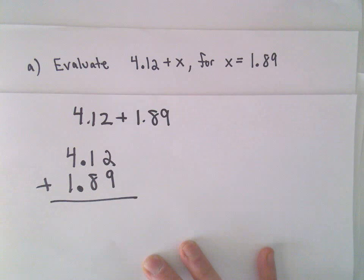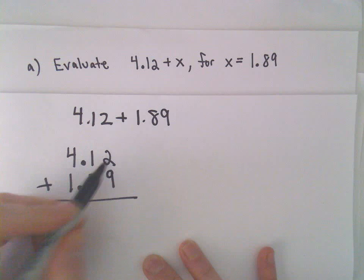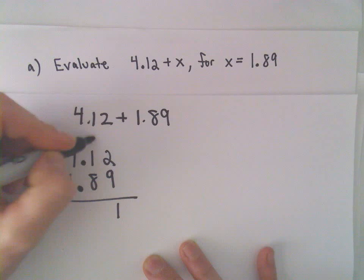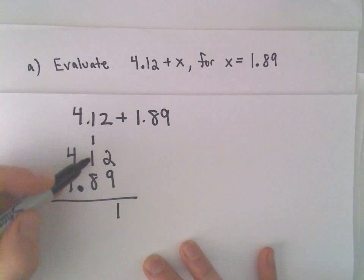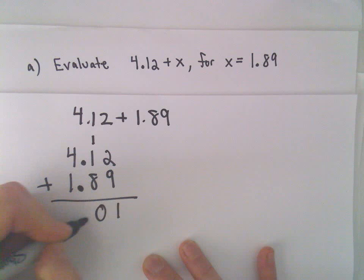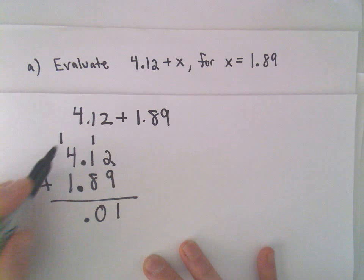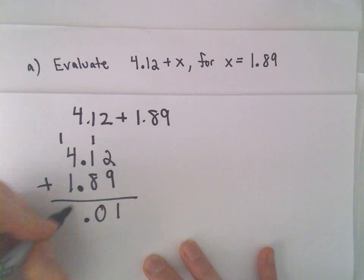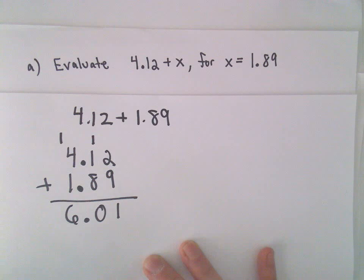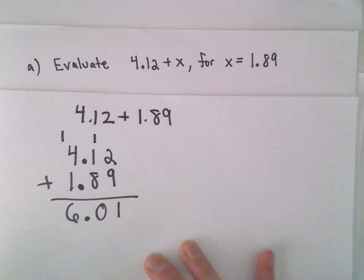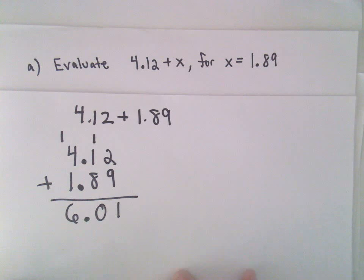Notice again, I've got my decimal places lined up. 2 plus 9 is 11, so we'll keep a 1 and carry a 1. 1 plus 1 is 2, plus 8 is 10, so we'll keep the 0 and carry the 1. 1 plus 4 plus 1 will give us 6. So if we add those together we get 6.01.